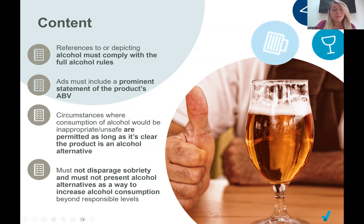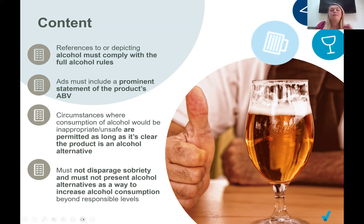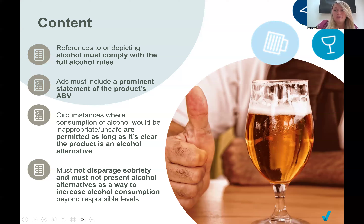Looking at the content rules in more detail: any depictions or references to alcoholic products must comply with the rules relating to the responsible portrayal of alcohol consumption. This wouldn't automatically apply to references to a shared brand name as long as the main effect of the ad is to promote the alcohol alternative. Ads should include a prominent statement of the product's ABV. Unlike the majority of alcohol advertising, ads for alcohol alternatives aren't prohibited from making a feature of their ABV or making preference claims on this basis. Similarly, alcohol alternative ads aren't prohibited from depicting circumstances where the consumption of an alcoholic drink would be inappropriate or unsafe — such as driving — but it must be clear that the product is not alcoholic. Products can resemble an alcoholic drink, but the ad does need to make explicitly clear that the product featured is an alcohol alternative. Finally, ads must not present such products as a way to increase alcohol consumption beyond reasonable levels, and they shouldn't include content disparaging sobriety or condoning or encouraging heavy or problem drinking.